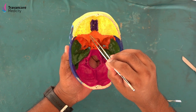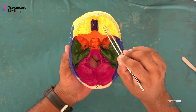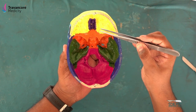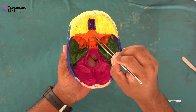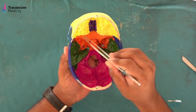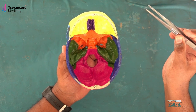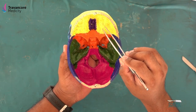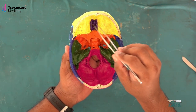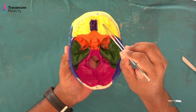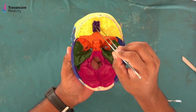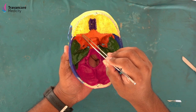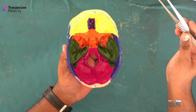The anterior cranial fossa is formed anteriorly and laterally by the frontal bone, and posteriorly by the body and the lesser wing of the sphenoid bone. The floor of the anterior cranial fossa is formed by the cerebral surface of the orbital plate of the frontal bone, the cribriform plate of the ethmoid bone, and the anterior part of the body and the lesser wing of the sphenoid bone.